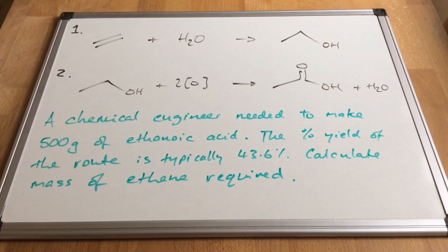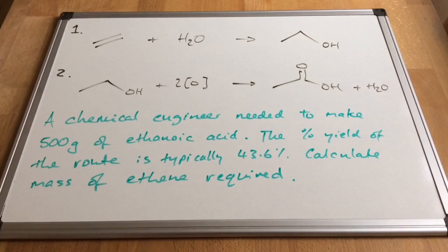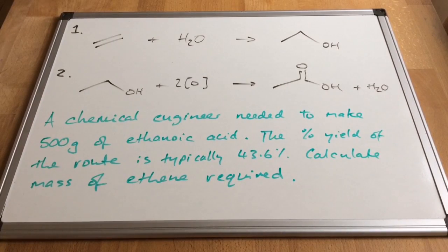So here's the calculation. A chemical engineer needed to make 500 grams of ethanoic acid. The percentage yield of the route is typically 43.6%. Calculate the mass of ethene required. So if you want to have a go at yourselves at that, pause the video and then play on and I'll go through the answer.